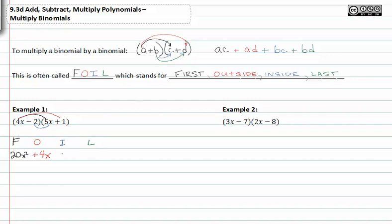Inside gives us negative 10x, and last gives us negative 2.